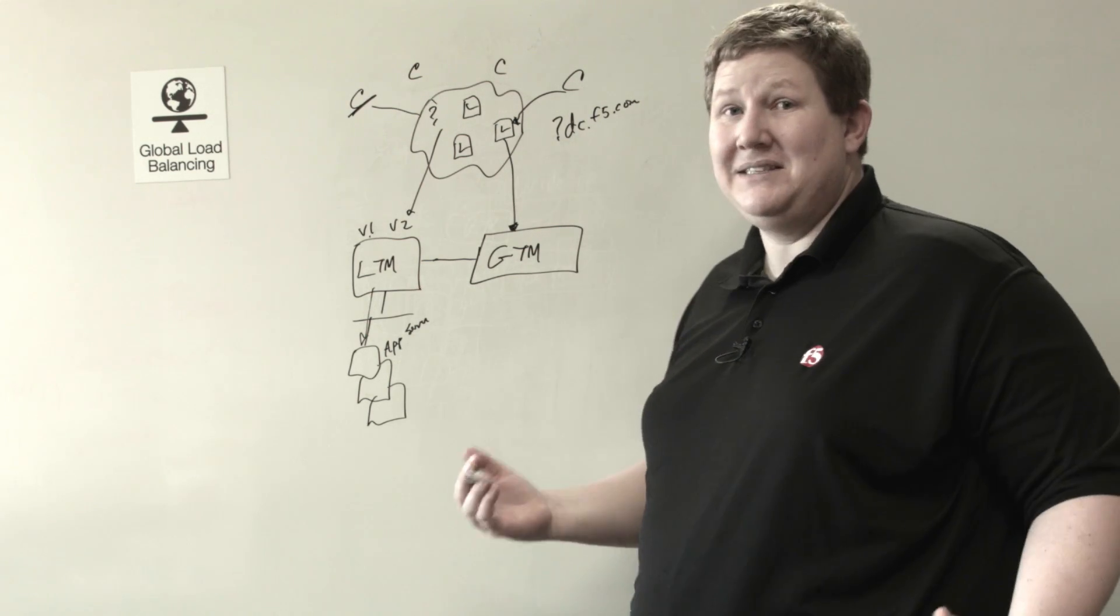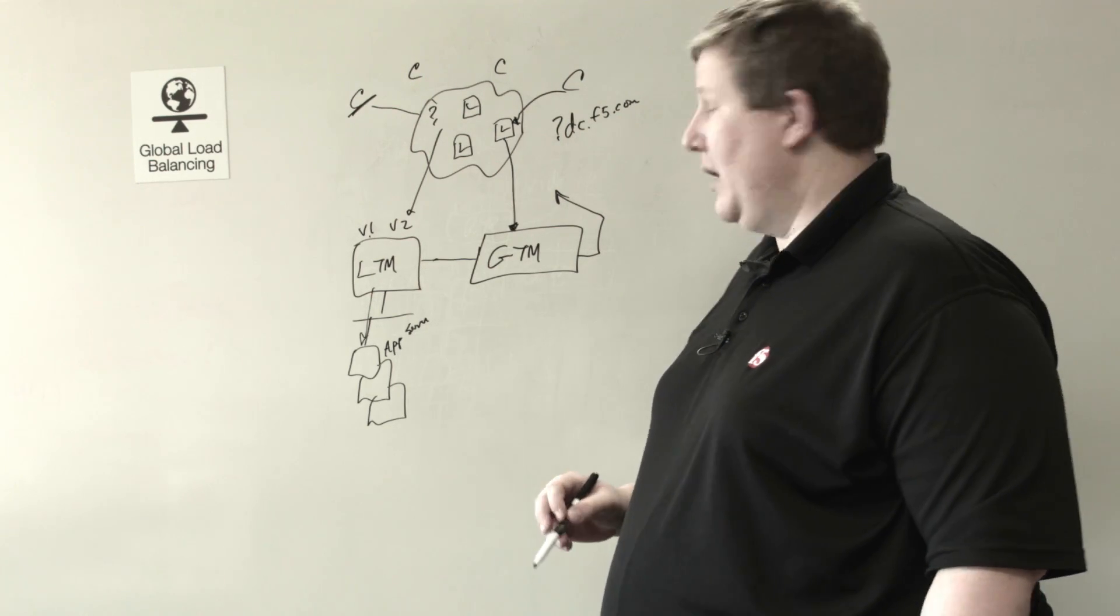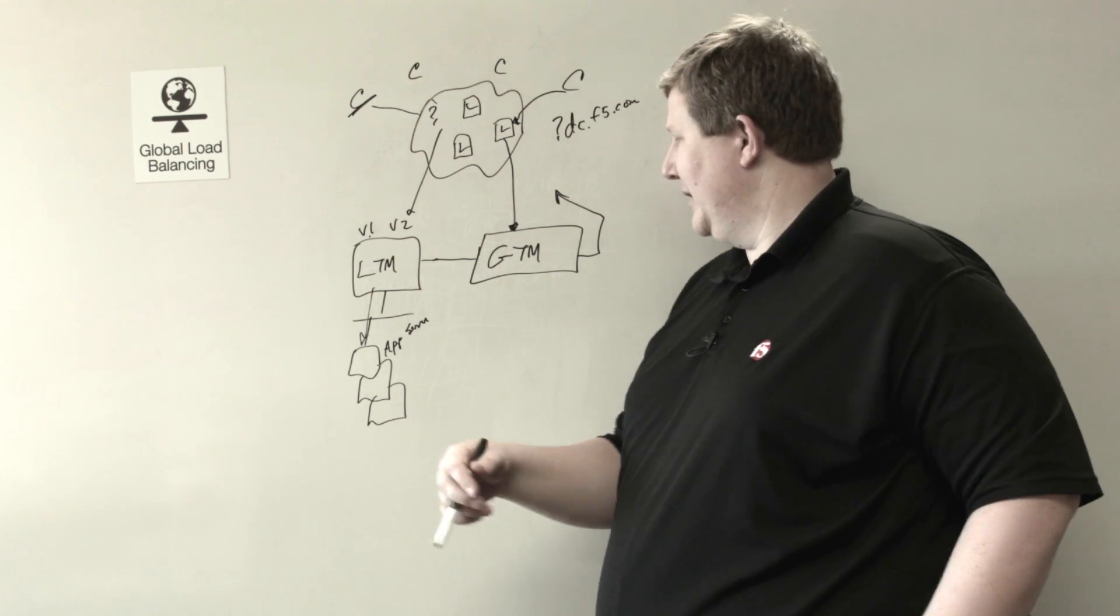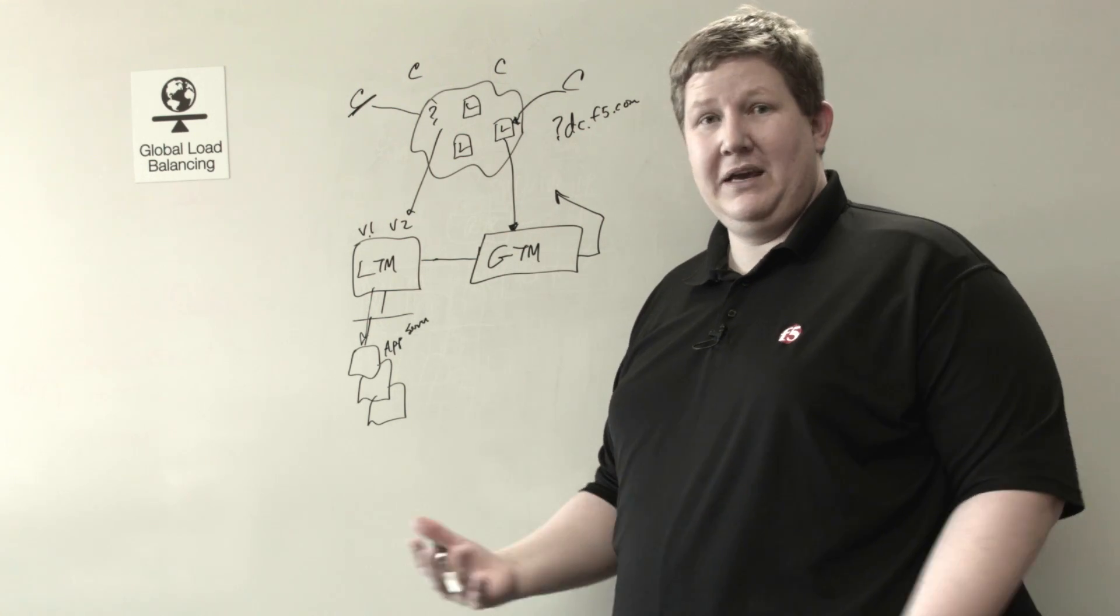Well, in this case, the GTM is the app server. It's getting the request and it's going to then respond. Predominantly, there are exceptions to that, but that's the core of how GTM works. It gets a DNS request, it gives a DNS answer.